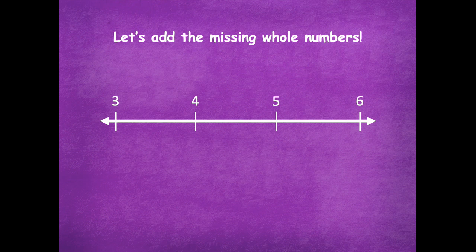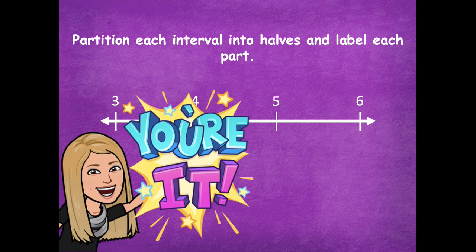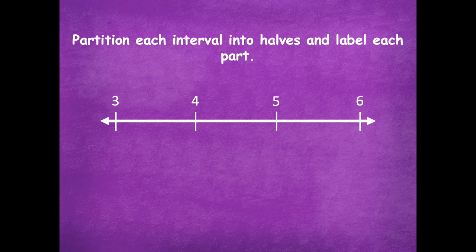Now you're going to partition each interval into halves and label each part. Each interval is just between those two wholes — so between three and four split into halves, between four and five split into halves, and between five and six split into halves — then label those fractions. Pause the video and complete the number line by partitioning into halves and labeling the parts, then click play when you're ready. I'm splitting each interval into halves. I know that three is six halves because six divided by two equals three.